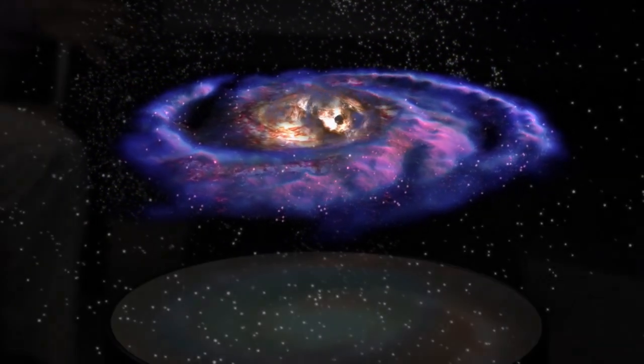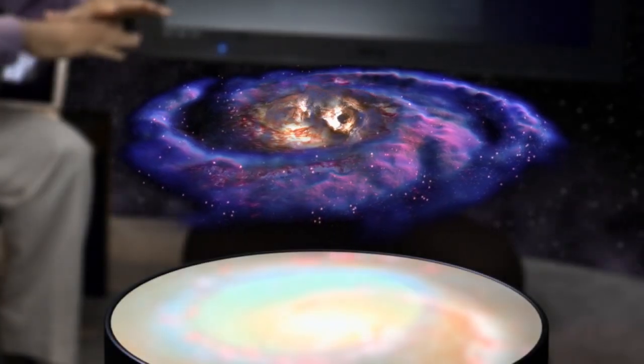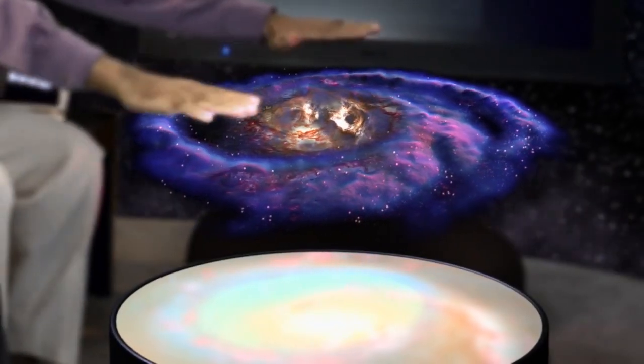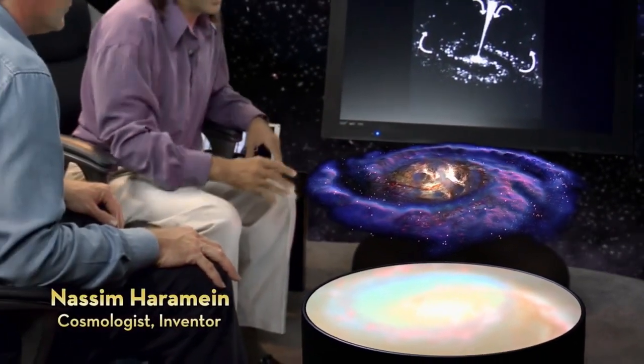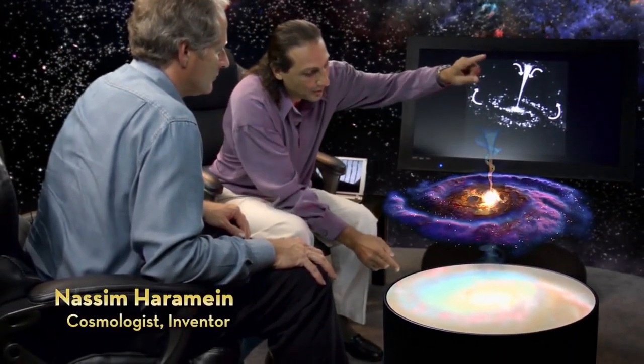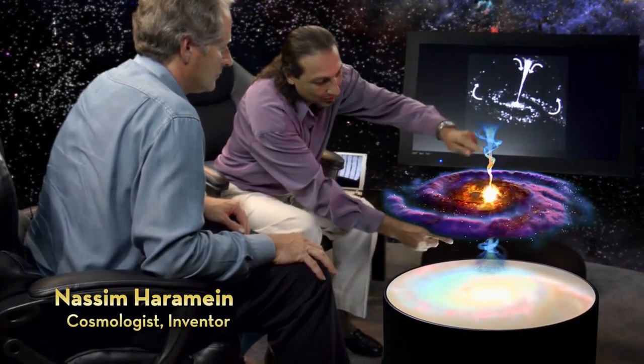They look like big arms of galaxies spinning around, and they have vortices that go from the center out to the edge of the galactic halo that surrounds them.